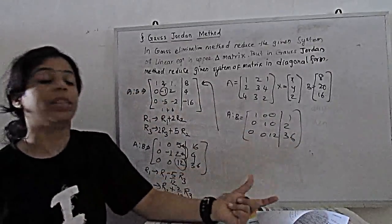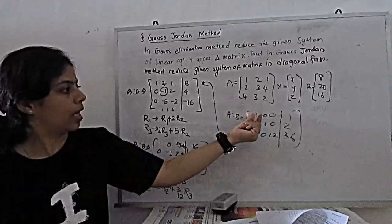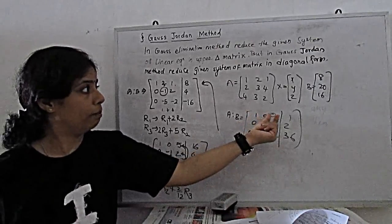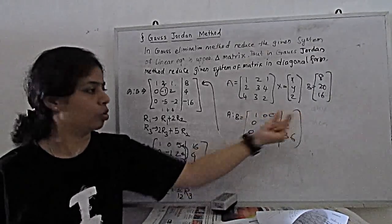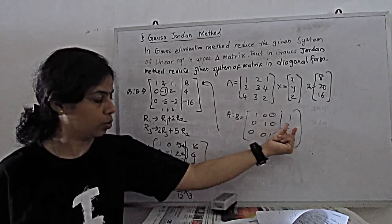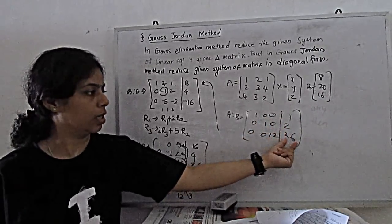With the help of this, we can see direct X plus 0Y plus 0Z. That means X equal to 1, Y equal to 2 and 12Z equal to 36.